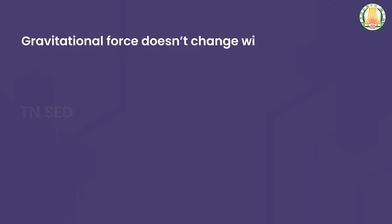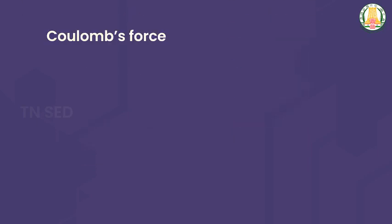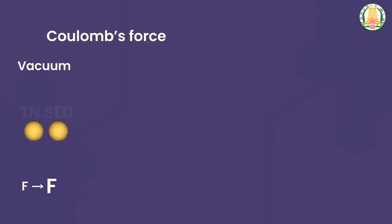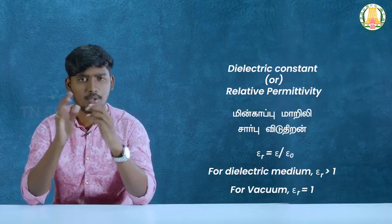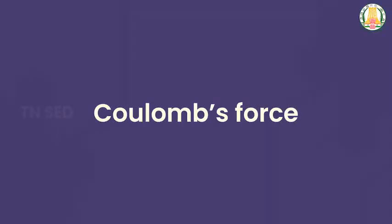What medium does the gravitational force act through? Gravitational force is strong whether you are in a vacuum or in air — the medium doesn't matter. But Coulomb's force depends on the medium. In a vacuum, the Coulomb force is at its maximum, while in a dielectric medium, the force is reduced. The dielectric constant of the medium determines this reduction, and we will discuss dielectric medium in more detail in another video.